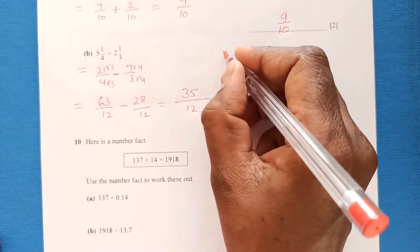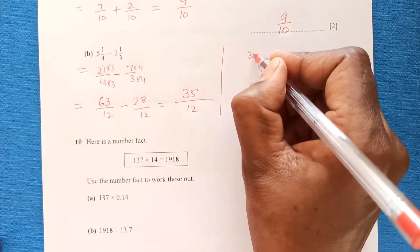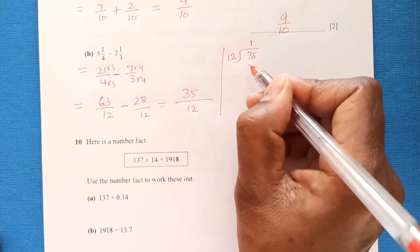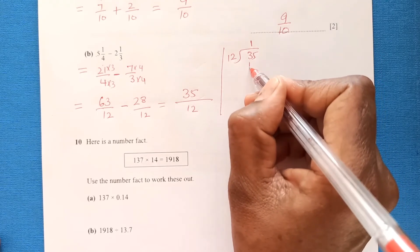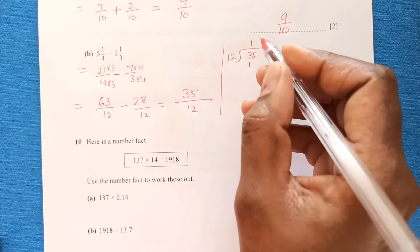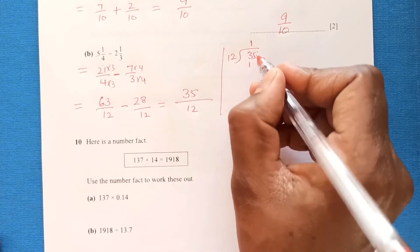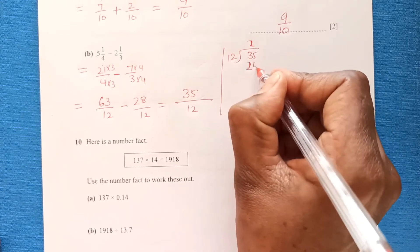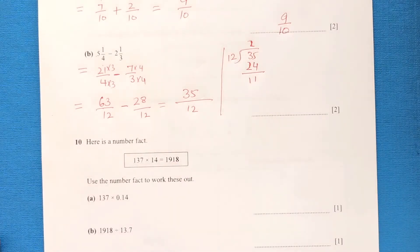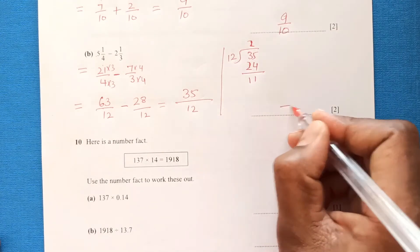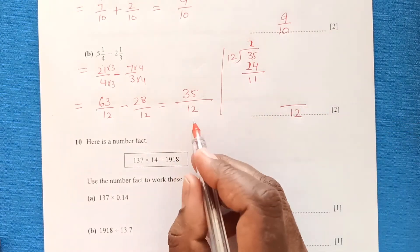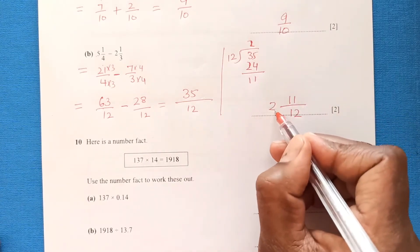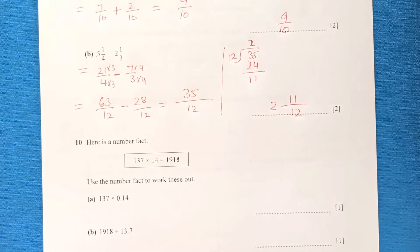Now we have 63/12 minus 28/12, which equals 35/12. Converting to a mixed number: 12 goes into 35 twice (24), with a remainder of 11, so the answer is 2 and 11/12. The remainder goes on top and the divisor stays as the denominator.